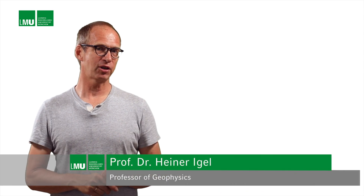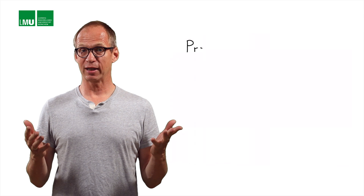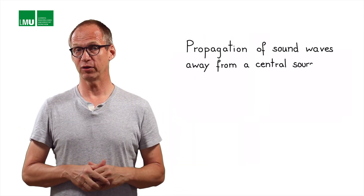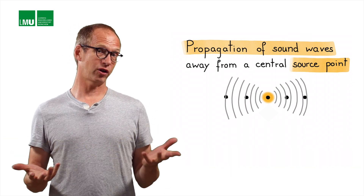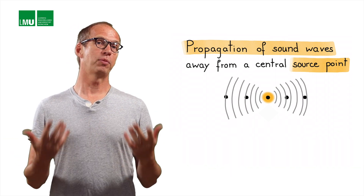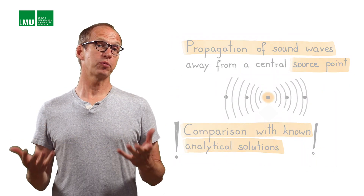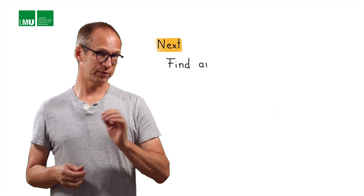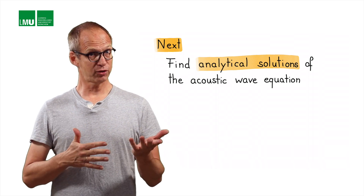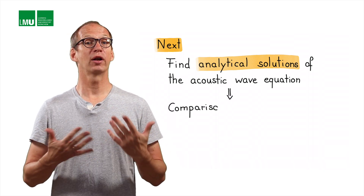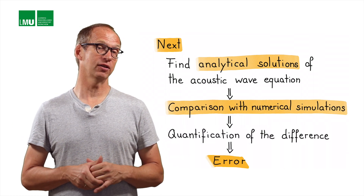We've seen in our Python implementation of the one-dimensional acoustic wave equation that we can propagate sound waves away from a central source point. One of the most important aspects of all numerical implementations of partial differential equations is the comparison with known analytical solutions. Before we proceed, we try to find some analytical solutions of the acoustic wave equation, then return to the numerical simulation to compare and quantify the difference and error.